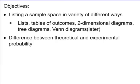We're going to look at the different ways that we can list a sample space, which are by lists, tables of outcomes, two-dimensional diagrams, tree diagrams, and Venn diagrams. You may have seen these in different math or science classes before. We also want to talk about theoretical and experimental probability — we have to know how they are different and how they are similar.